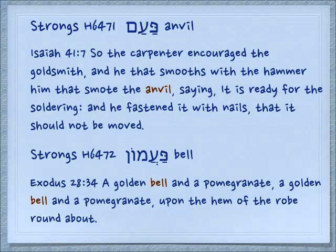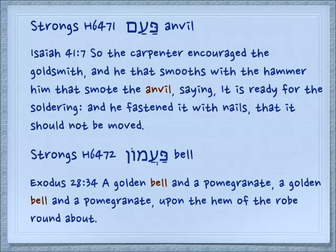Another concept of striking something one at a time brings us the word 'bell' — 'pa'amon.' Exodus 28:34: 'A golden bell and a pomegranate, a golden bell and a pomegranate, upon the hem of the robe round about.' And I think this is the only place where the word 'bell' appears in association with the priest's garment.